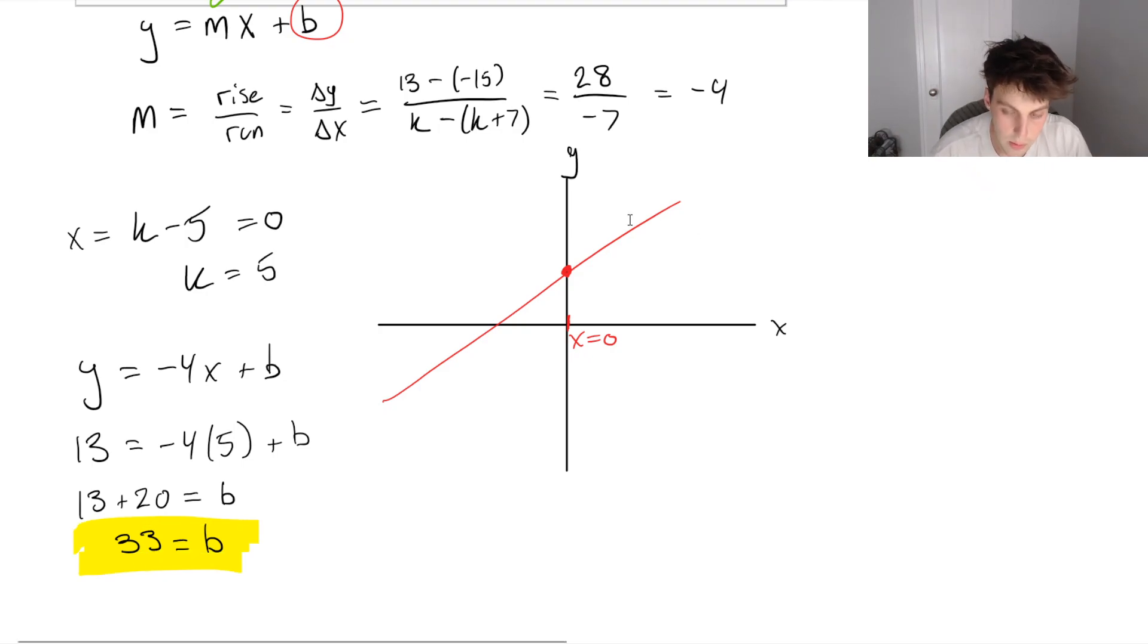Another way that you could have solved this, if you wanted, is we could have said that we know that the slope is negative 4. And if we have a slope of negative 4, then why don't we use the point of our y-intercept for our slope, our rise over run. So we could do b, our y value, minus 13, over, and our x value corresponding to the y value of b is k minus 5 minus k. Now we can see we actually don't necessarily need to solve for k because they'll cancel out.